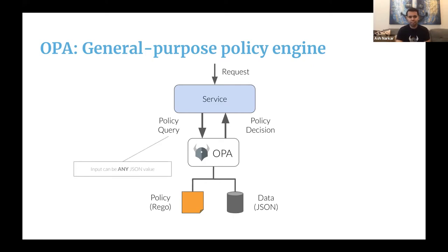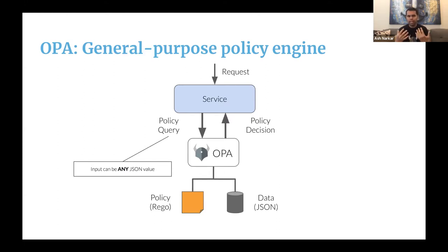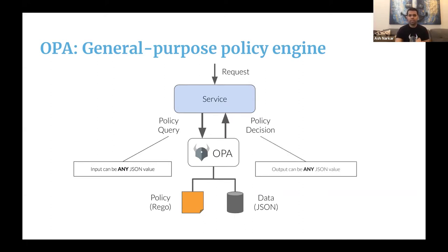The policy query itself can be any JSON value. For example, if you're doing Kubernetes admission control, the policy query could include the pod manifest. Or if you're doing API authorization, the policy query could include the request path, the request method, and so on. As long as you give OPA some kind of structured input and write policies that make sense for that input, OPA will return a decision back to you. Since OPA is not tied to any particular data format, we call it a general purpose policy engine. The policy decision itself can be any JSON value, and it is up to your service to interpret and enforce it.